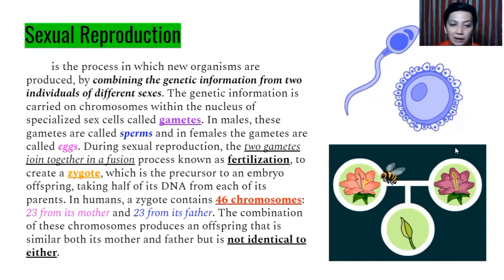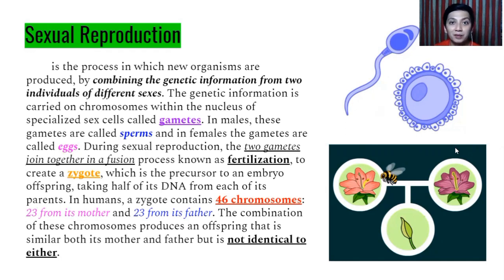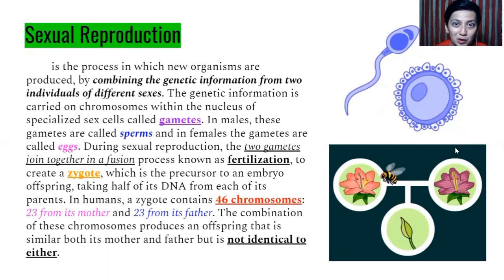In humans, we have 46 chromosomes — 23 chromosomes from the mother and 23 chromosomes from the father. The combination of these chromosomes produces an offspring that is similar to both its mother and father, but not identical to either. So 23 chromosomes came from the mother, 23 from the father. When they combine, you are a new organism. You came from your parents, but you are not entirely the same as your parents — you are the combination of two genes, but a totally different individual.